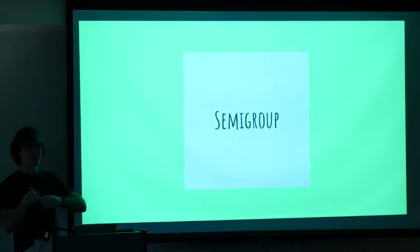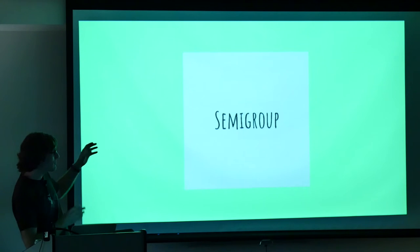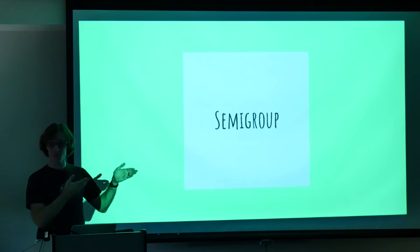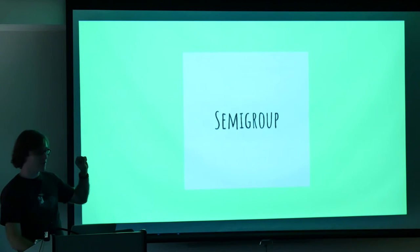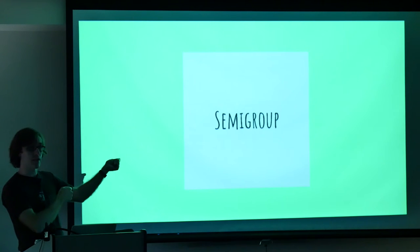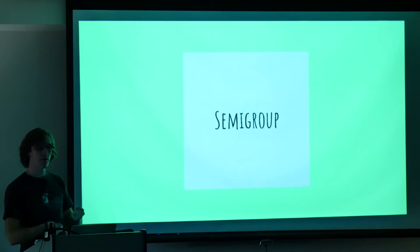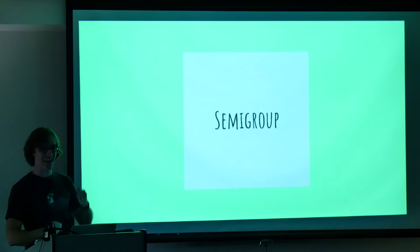So we're going to talk about monoids, but before we talk about monoids we're going to talk about semigroups. And just a note on the names, these names were chosen completely independent of programming. They were chosen for a mathematical sort of bent. Semigroup is related to group. It's a weaker form of group. Knowing the name is useful because you'll run across it in literature and stuff.